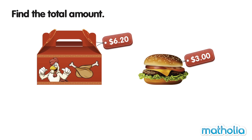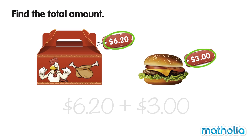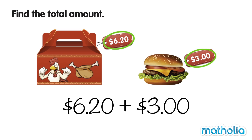Find the total amount. The box of chicken drumsticks costs $6.20. The cheeseburger costs $3. To find the total amount, we need to add.